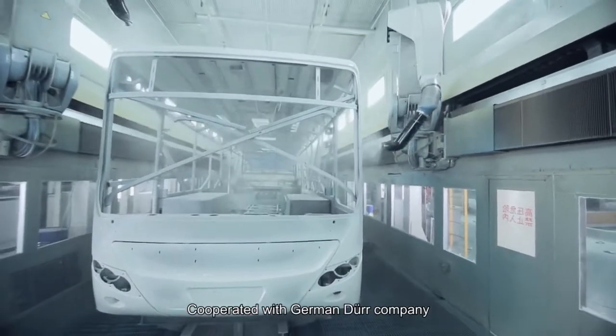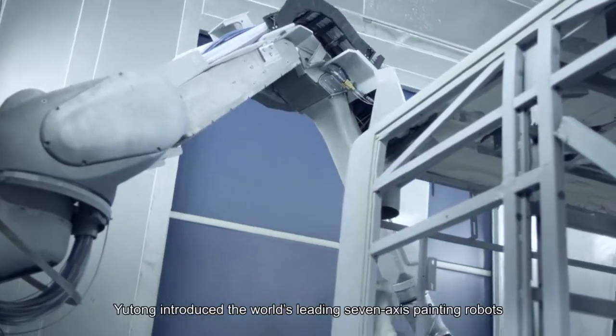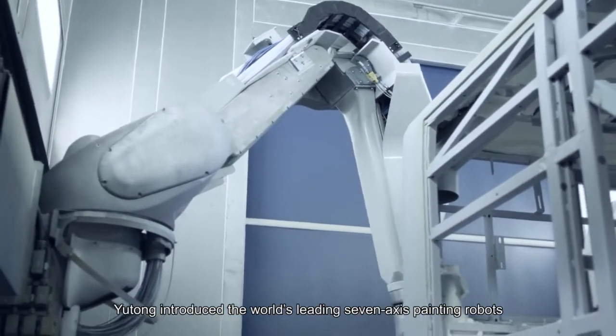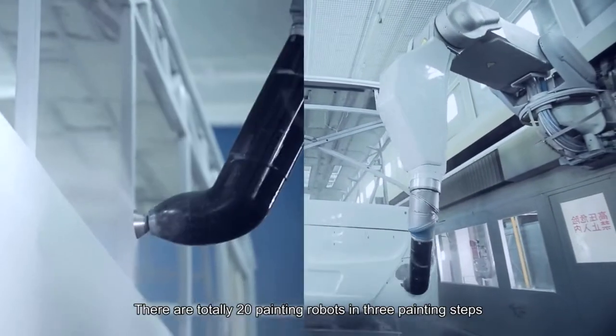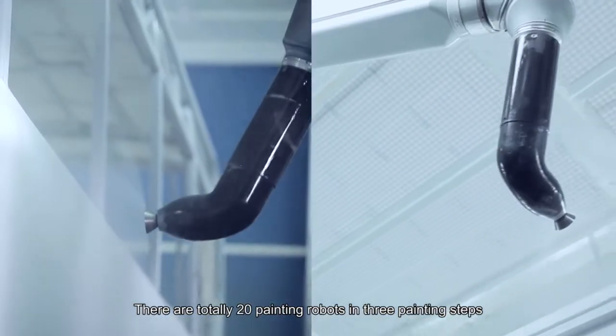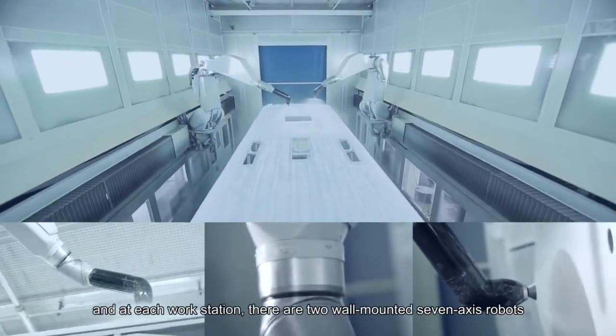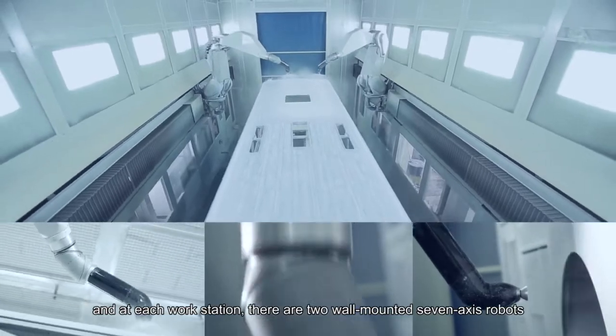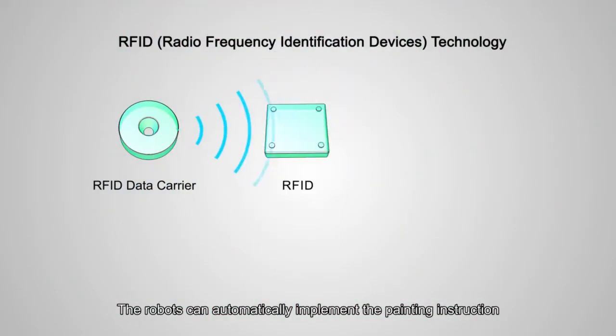Cooperating with German Dirk Company, Yutong introduced the world's leading seven-axis painting robots. There are 20 painting robots in total across three painting steps, with two wall-mounted seven-axis robots at each workstation.